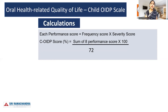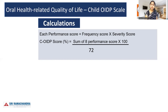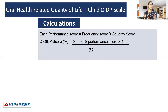Each performance score is calculated by multiplying the frequency score with the severity score. The overall OIDP score is expressed as a percentage, calculated by taking the sum of all 8 performance scores, dividing by 72, and multiplying by 100. The larger the percentage, the greater the impact of oral disease on daily activities; the lesser the percentage, the less the impact.